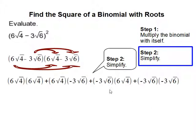Step 2 is to simplify. First we're going to multiply the roots. Root 4 times root 4 is root 16. Root 4 times root 6 is root 24, and root 6 times root 4 is root 24. Root 6 times root 6 is root 36.